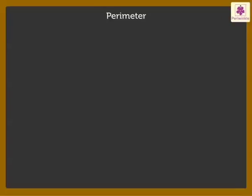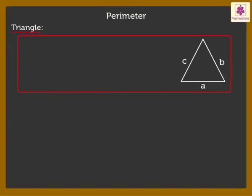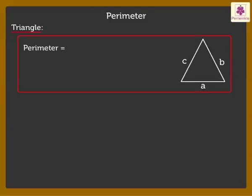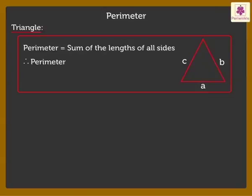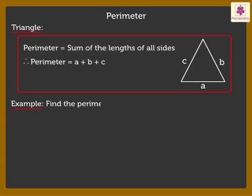Let's start with the triangle. A triangle has three sides: side A, side B, and side C. To find the perimeter of a triangle, we add the lengths of all its sides. Thus, perimeter of a triangle is equal to A plus B plus C.